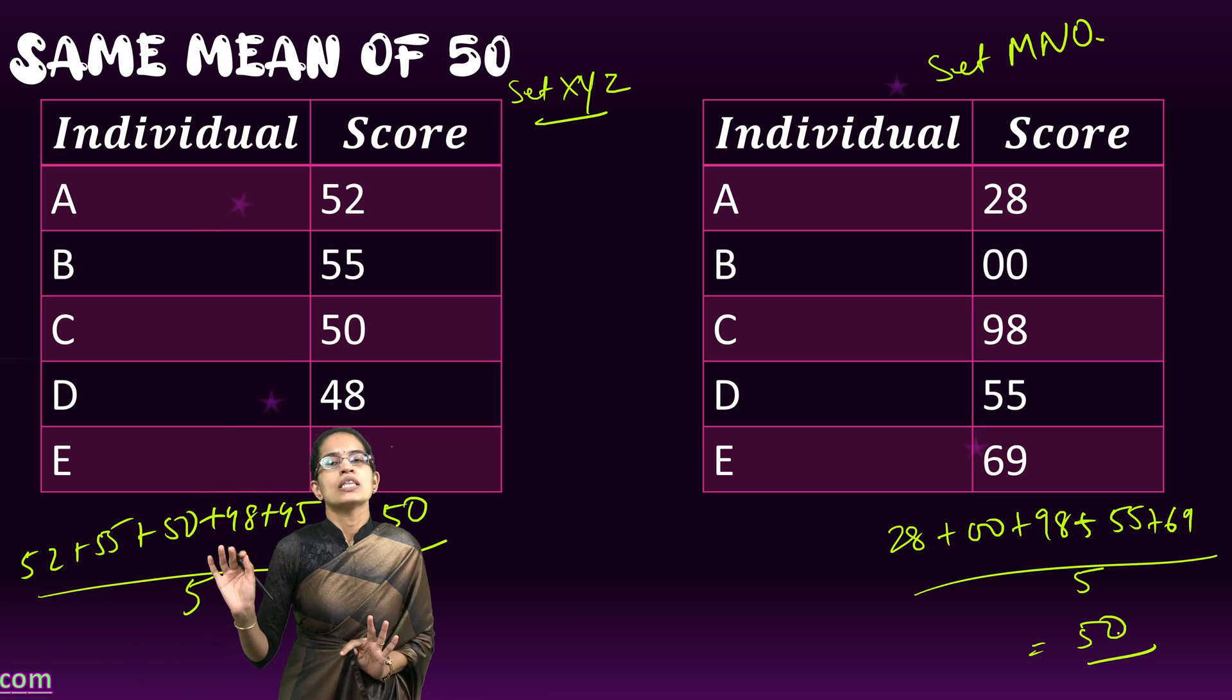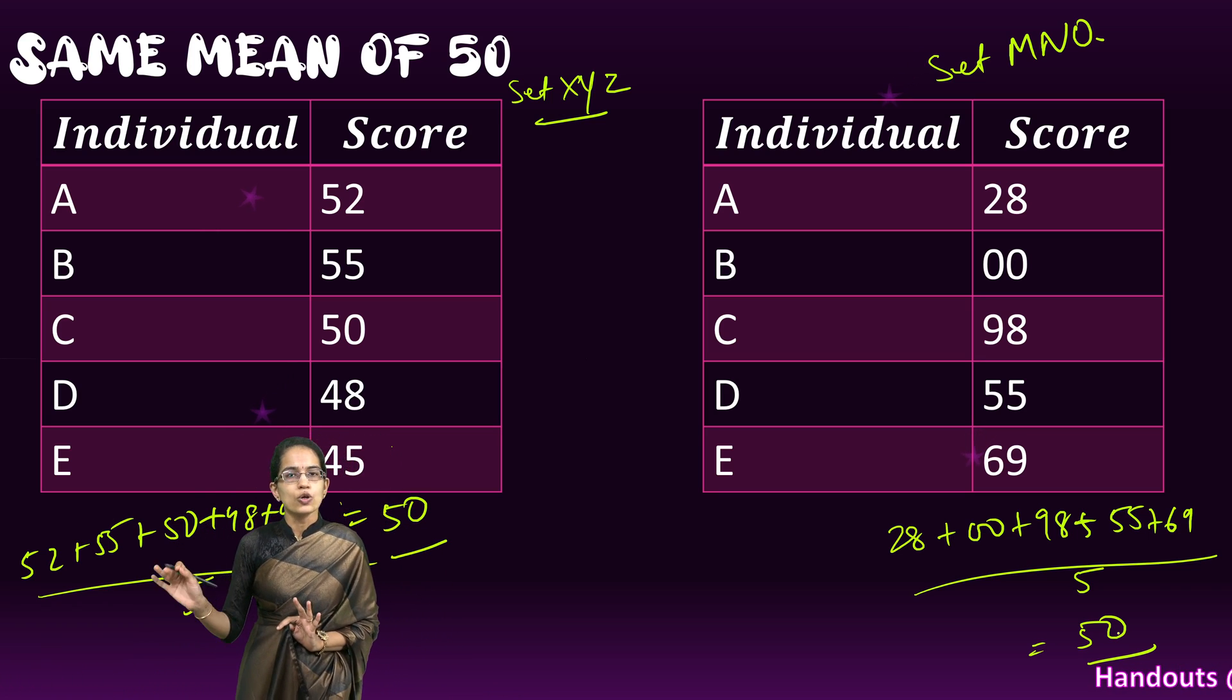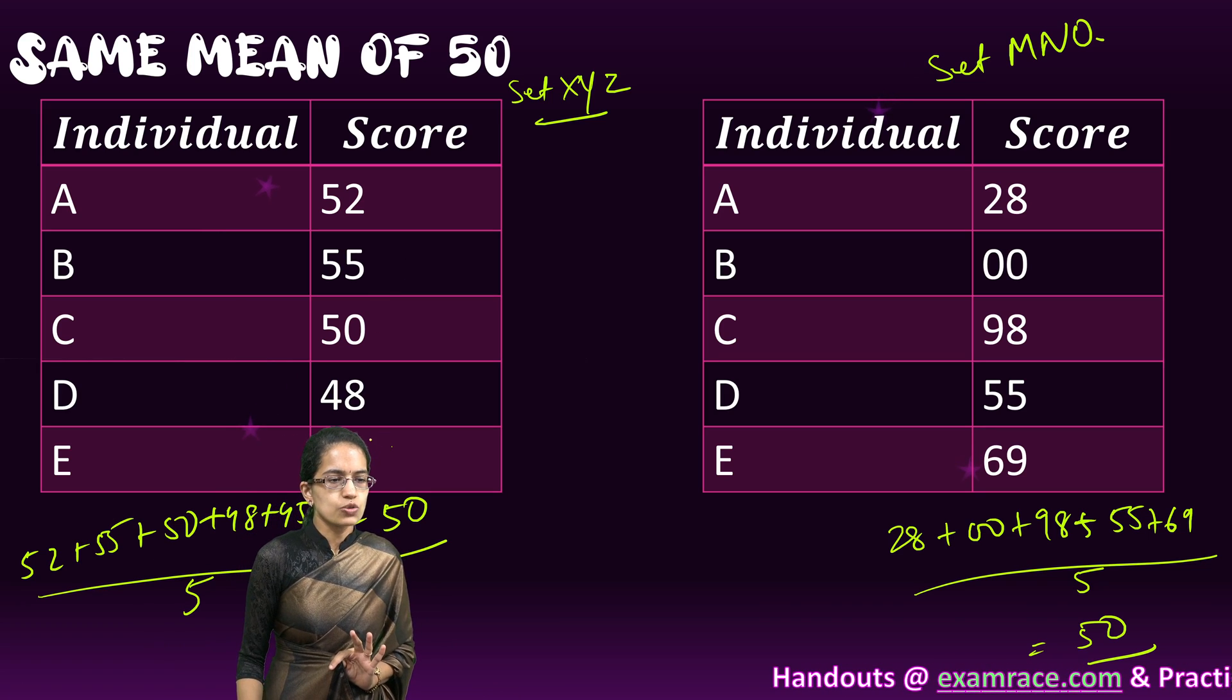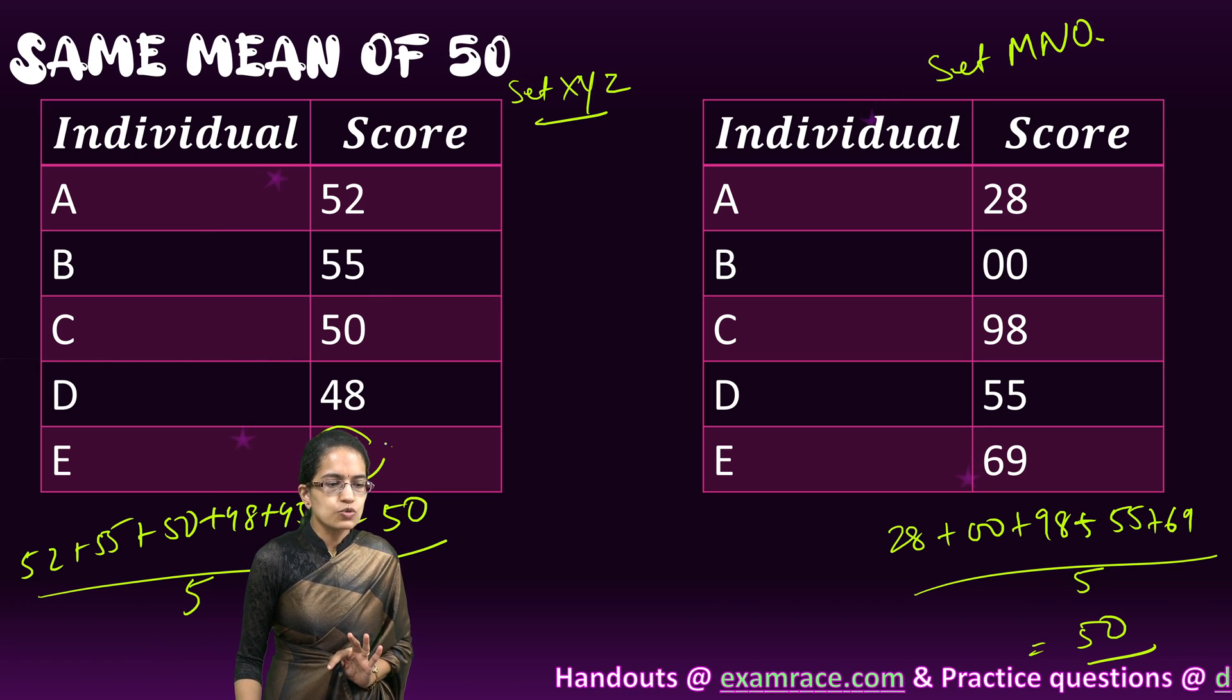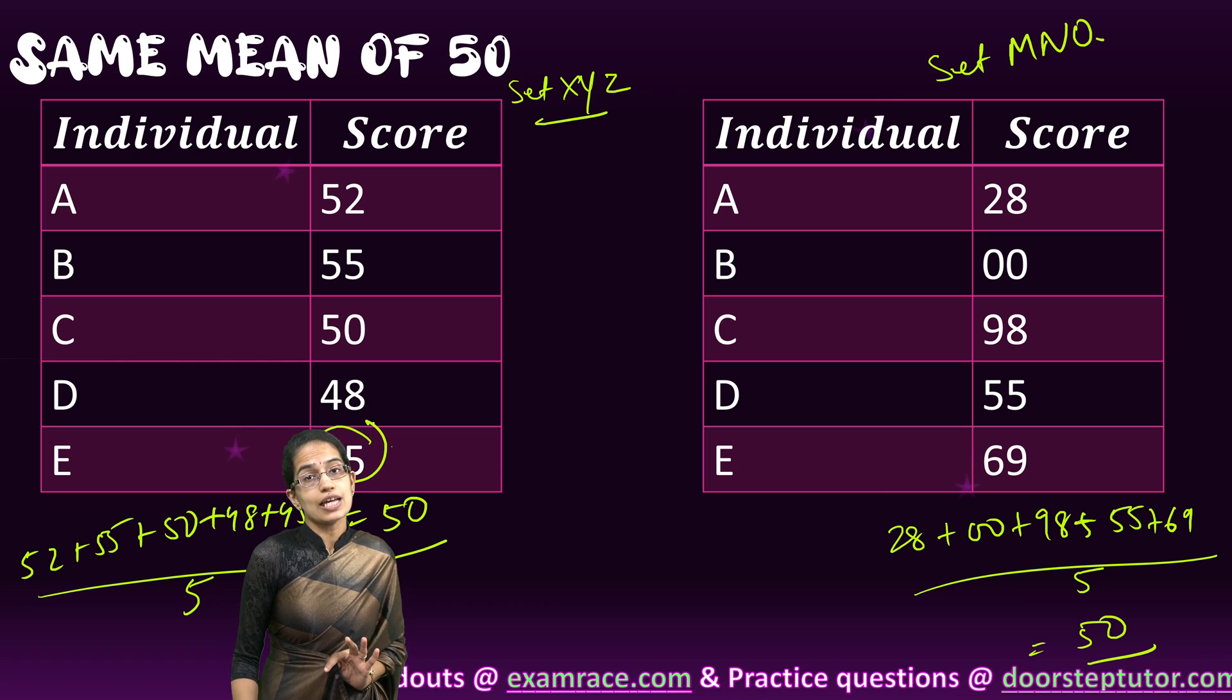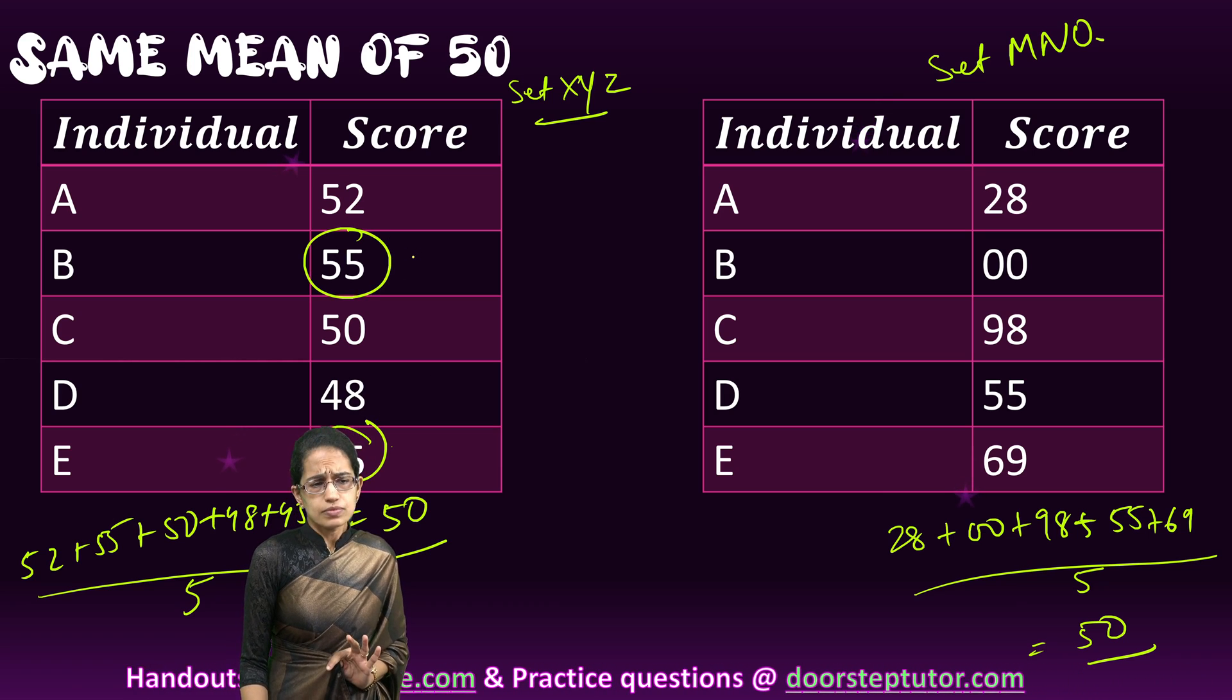What is range? The difference between the highest and the lowest values. In the first case, the lowest value is 45, the highest value is 55, so my range is 55 minus 45, which is 10.